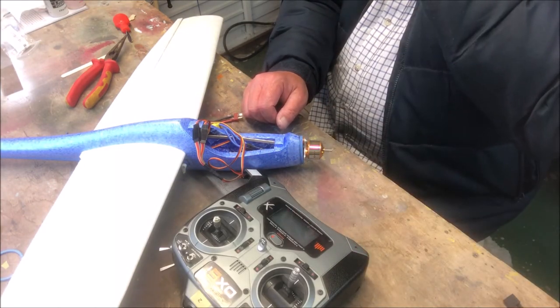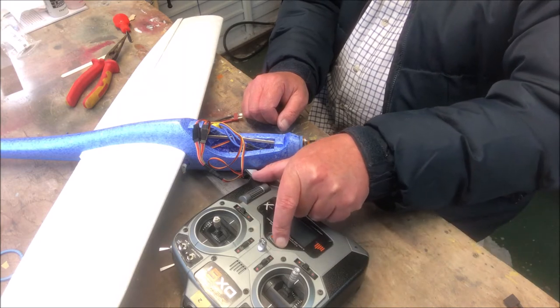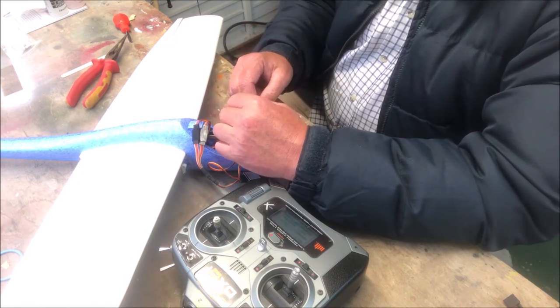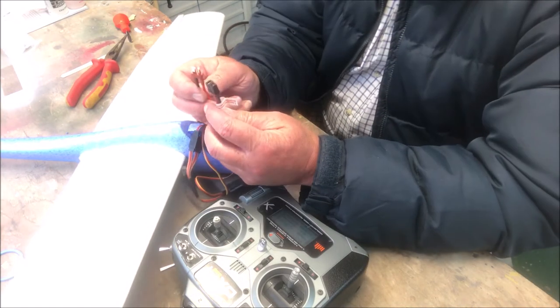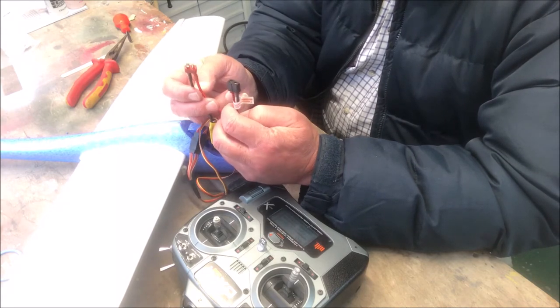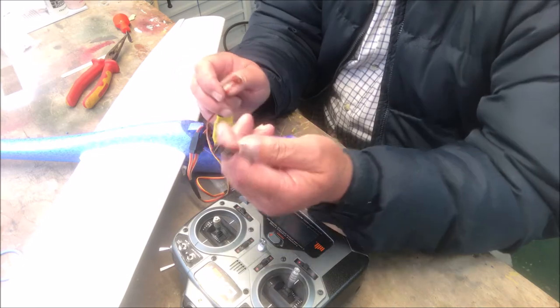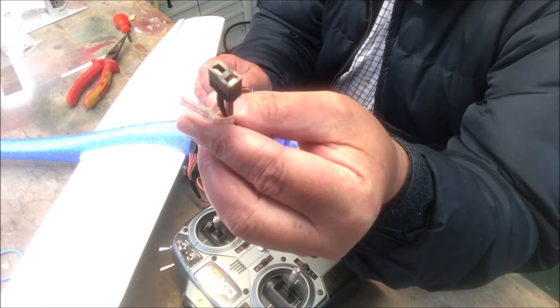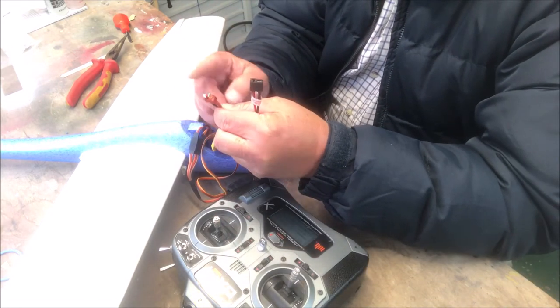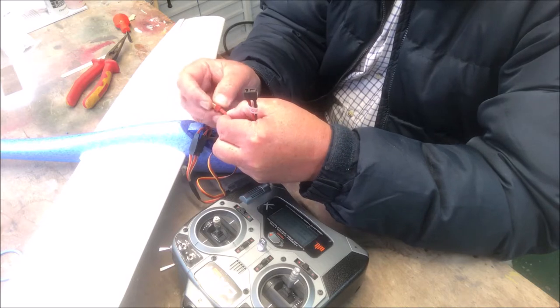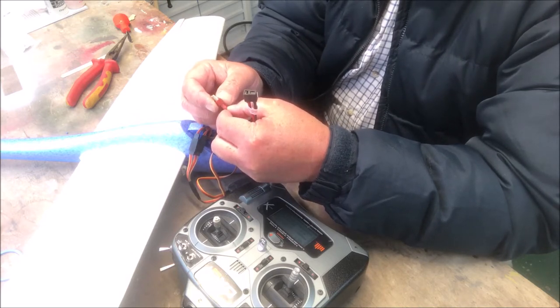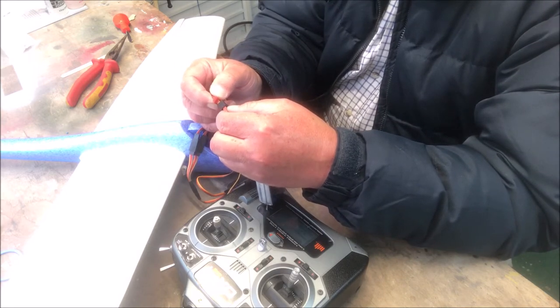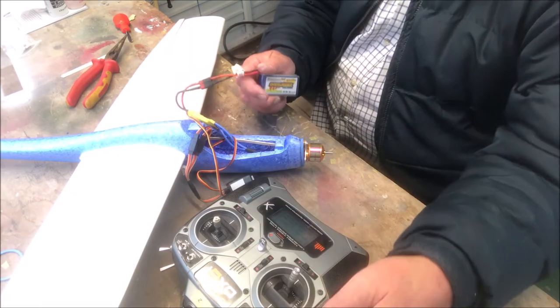Now this is the exciting part where we turn on the radio. This is a Spectrum DX6i. The latest one is I don't know, nine or ten or something. It's a bit like iPhones, they upgrade them. Note that I'm using a Deans connector on, well, this comes with the Deans connector. So you have to have a battery connection which is also a Dean connection. Some people call this a T connection. This one I'm going to change this connection because it's not very good on the positive side, but that's coming in the post.